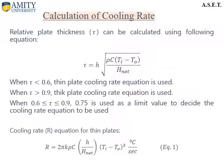The relative plate thickness tau can be calculated using the following equation. If the value of tau is less than 0.6, the thin plate cooling rate equation is used. If tau is more than 0.9, the thick plate cooling rate equation is used. If tau falls between 0.6 and 0.9, a value of 0.75 is used as the limit to decide which cooling rate equation to apply.